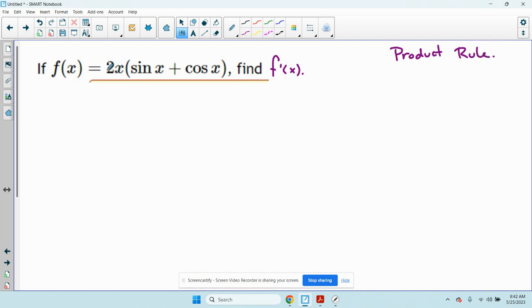The product rule says that to find the derivative of a product, I'm going to find the first times the derivative of the second plus the second times the derivative of the first.